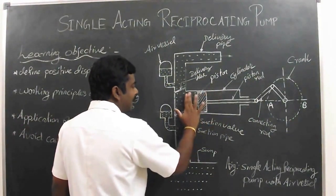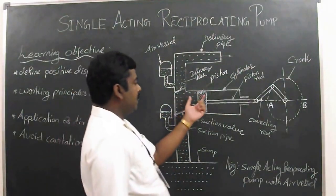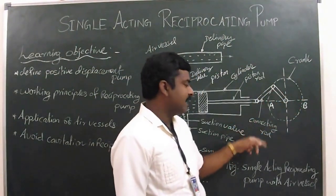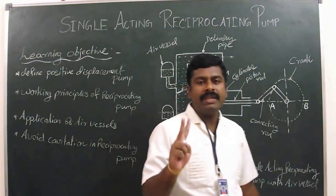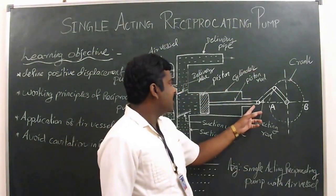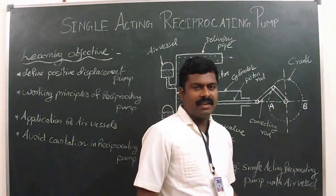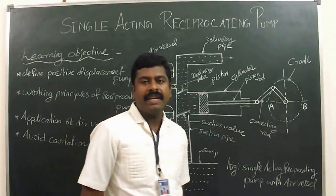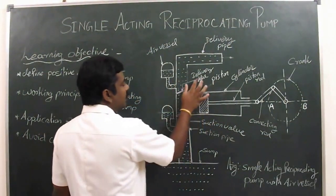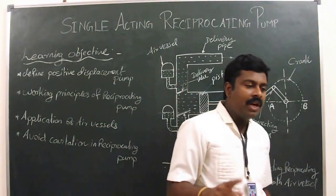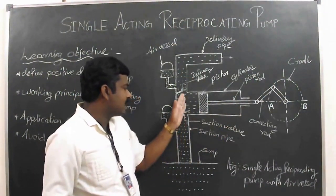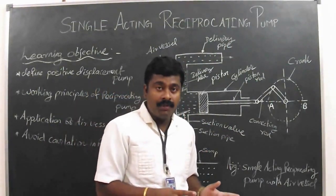The piston moves back and forth inside the cylinder. The movement of the piston is obtained by connecting the piston rod and crank by means of a connecting rod. The connecting rod has two ends — one is the small end and the other is the big end. The small end of the connecting rod is connected to the piston rod, and the big end is connected to the crank. The crank is rotated by means of an electric motor. The single-acting reciprocating pump has two valves: suction valve and delivery valve. These are one-way valves, also known as non-return valves.